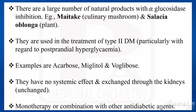Some natural products also have alpha-glucosidase inhibition property — maitake (a mushroom) and Salacia oblonga (a plant). Alpha-glucosidase inhibitors are used in the treatment of type 2 diabetes mellitus, particularly for postprandial hyperglycemia. Examples are acarbose, miglitol, and voglibose. They have no systemic effect and are excreted through the kidneys in unchanged form.